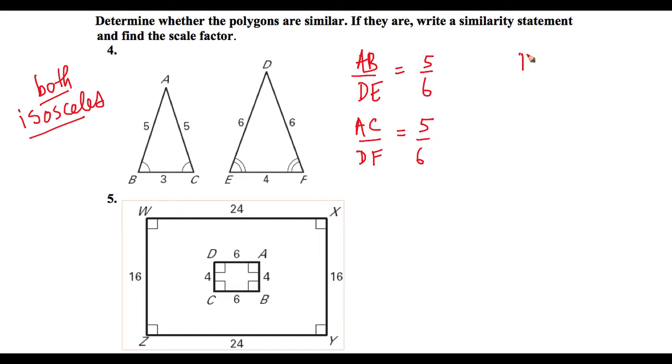But the problem comes when you compare BC and EF. Big problem here because you have 3 over 4, and there is no way that 3 over 4 is equal to 5 over 6. 3 over 4 is exactly equal to 0.75, just for your reference. And then 5 over 6, this is equal to 0.833333 repeating. So these are definitely not equal to each other. These are proportions that are not equal to each other.